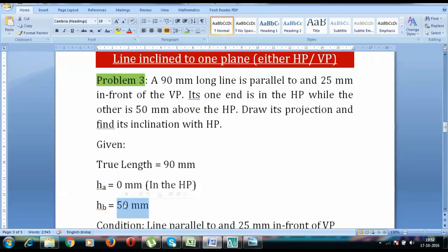Similarly, we have another end point, that is end point B, which lies at a height of 50mm above the horizontal plane. This one over here. Now draw its projection and find its inclination with HP.